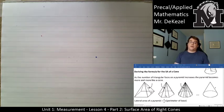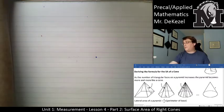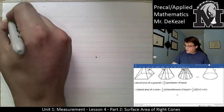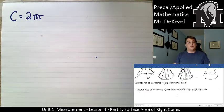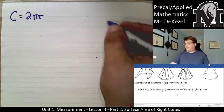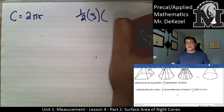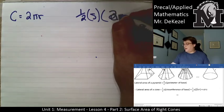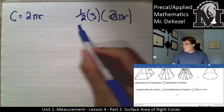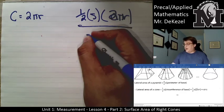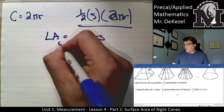The perimeter of the base for a cone is actually the circumference, and the circumference formula is 2πr. So it is just like the triangle formula: one half times the slant height times the base circumference, which is 2πr. When you take one half and 2 together, they cancel, so we can rearrange it: the lateral area for a cone is simply πrs.